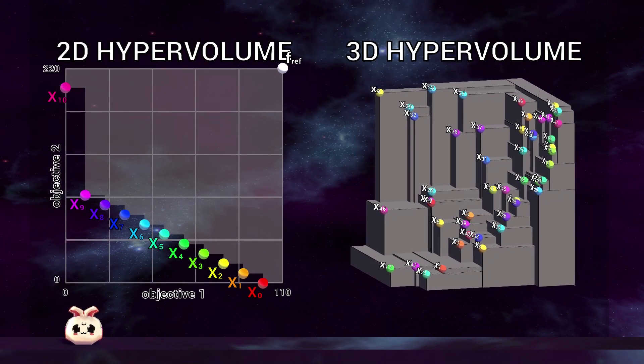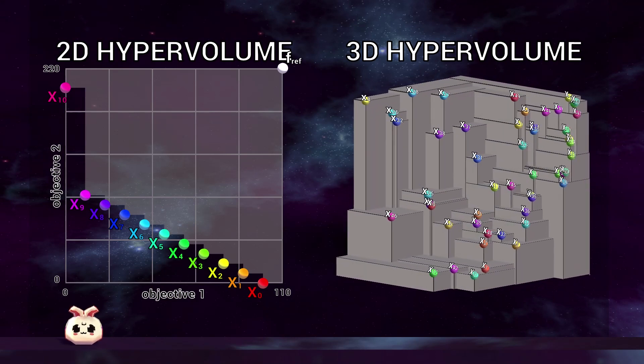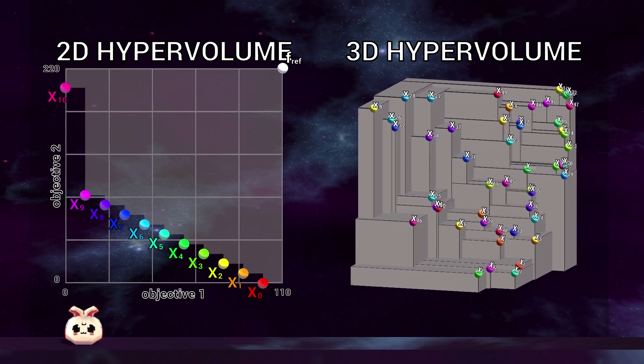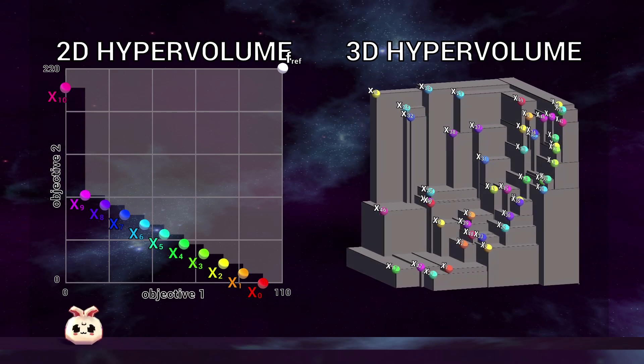Here we can see unrelated visualizations of the hypervolume indicator. It can score a set of solutions by using the solutions, the intersecting points, and an additionally selected reference point to form an n-dimensional polytope.